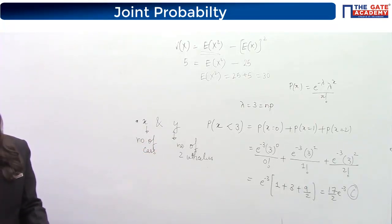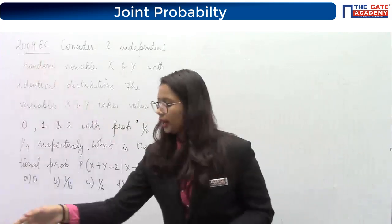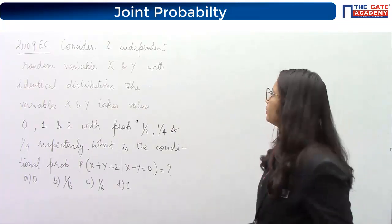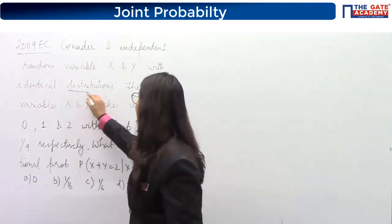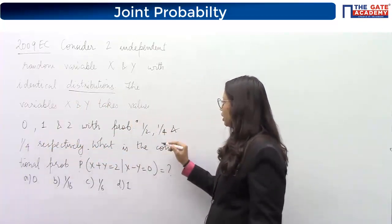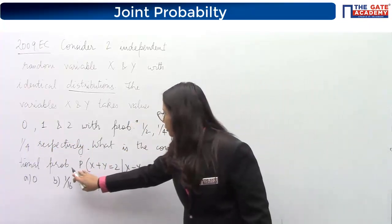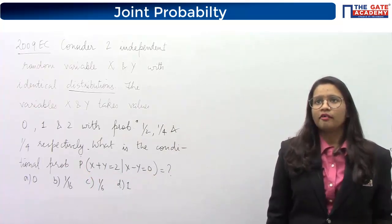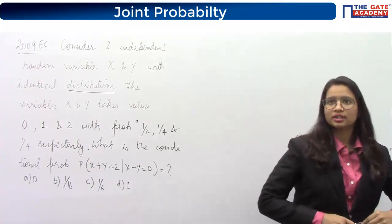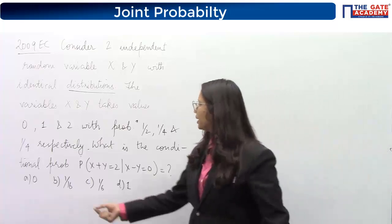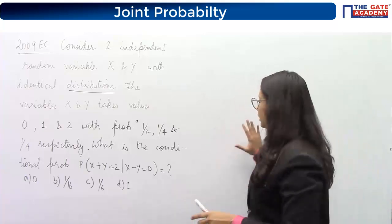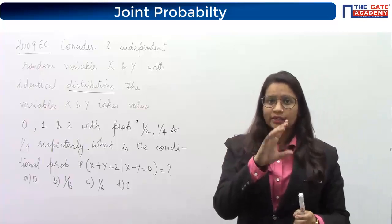The question involves two independent random variables X and Y with identical distributions. X and Y take the values 0, 1, and 2 with respective probabilities 1/2, 1/4, and 1/4. We have to determine a conditional probability. First, note that X and Y are discrete random variables since they take separate values 0, 1, and 2.